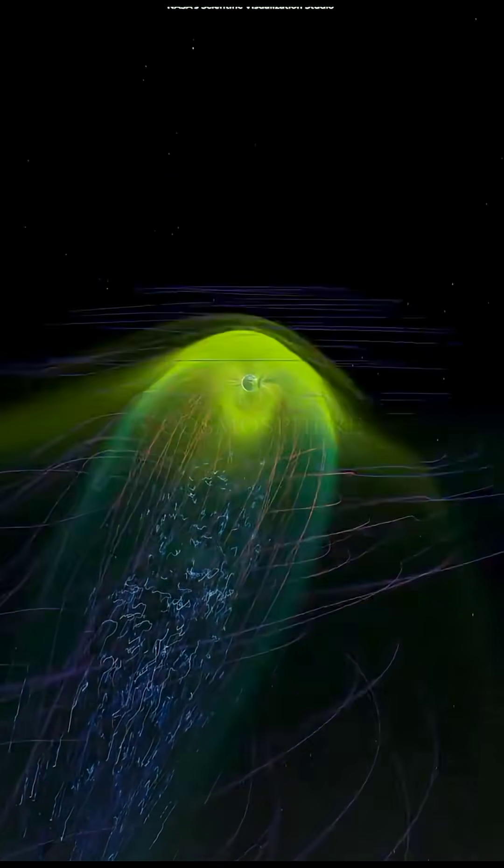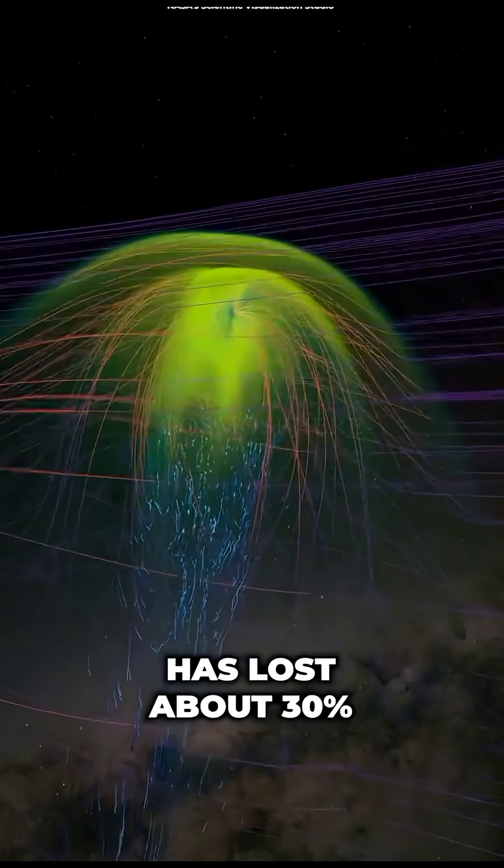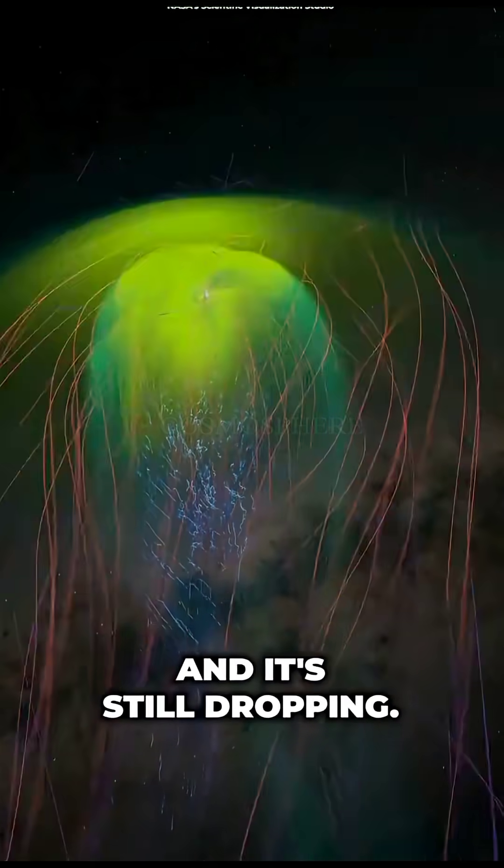Earth's shield is weakening. In the past 3,000 years, our planet's magnetic field has lost about 30% of its strength, and it's still dropping.